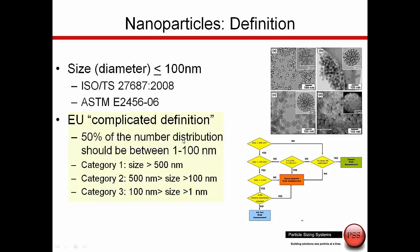The EU says that 50% of the number distribution should be between 1 and 100 nanometers. That really kind of muddies the water — the rest of the world just says around 100 nanometers.